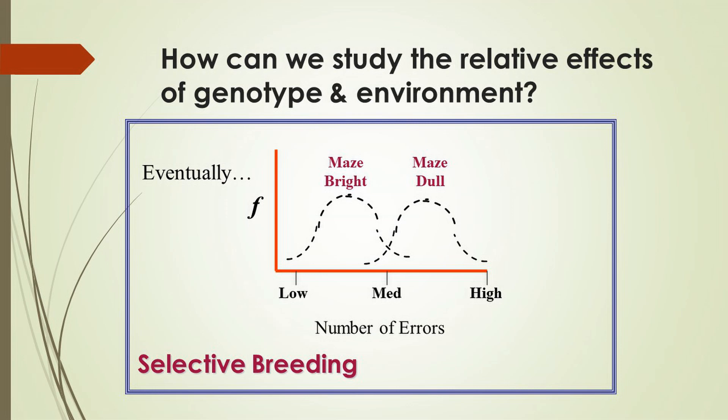What these researchers found was that when you manipulate the environment like this, maze bright rats are no longer maze bright and maze dull rats are no longer maze dull. The maze bright rats showed reduced intellectual abilities, while the maze dull rats appeared to have increased intellectual abilities. So once again, it's always both nature and nurture — both genetic inheritance and environment — that play a role in the development of any behavior.